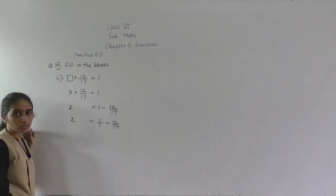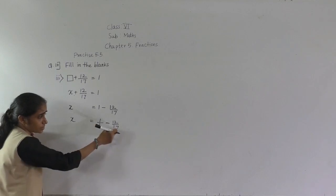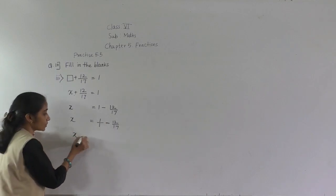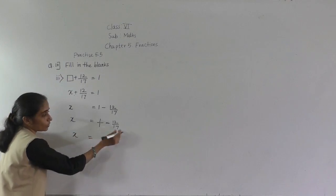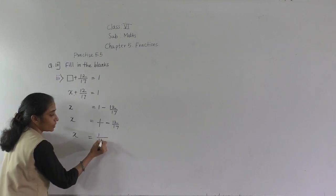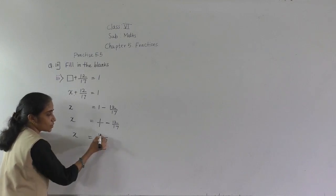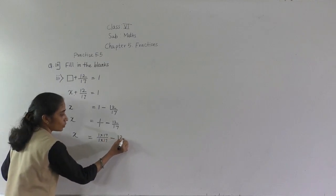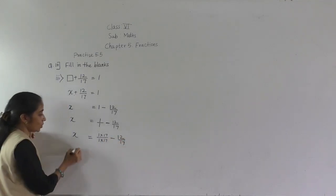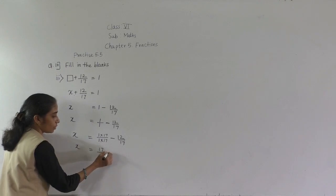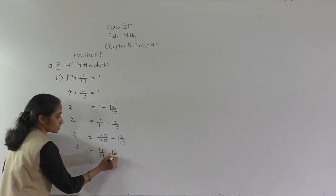We have to make the denominators the same — it is 1 here and 17 here. So the LCM will be 17. For 1 upon 1, multiply numerator also by 17 to get 17 upon 17. Minus 12 upon 17, as it is.